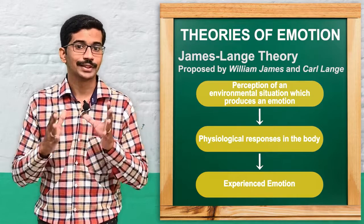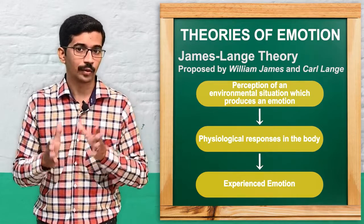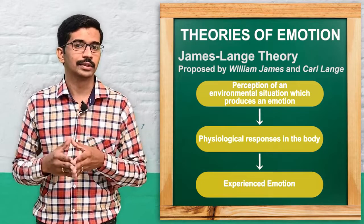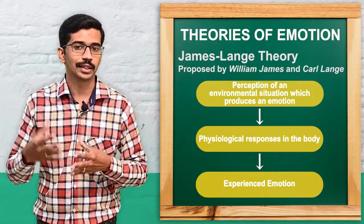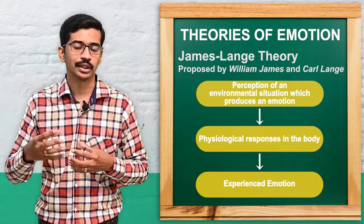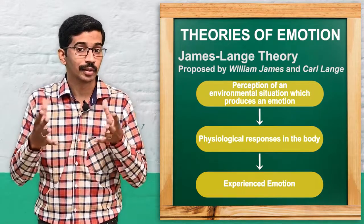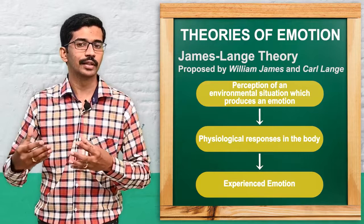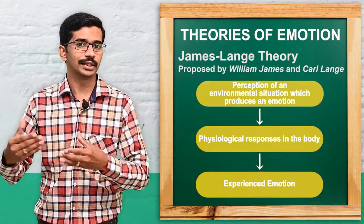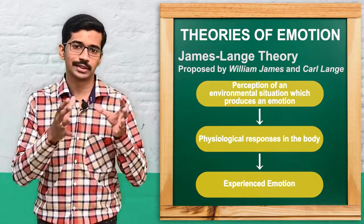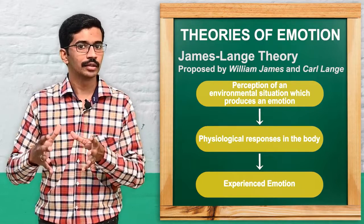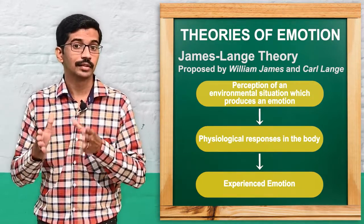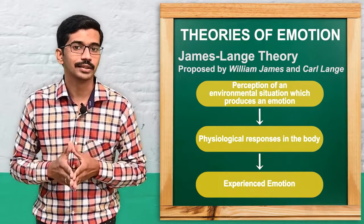For example, according to the James-Lange theory, if we see a snake, we get certain physiological responses — our heartbeat increases, our respiratory rate increases, we may feel shivering — and as a result of that, we experience fear. So we see a snake, we tremble, and then we feel fear. That is the theory given by James and Lange.